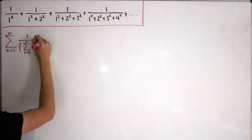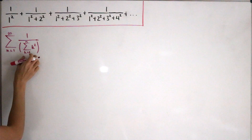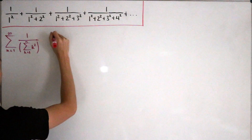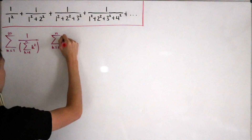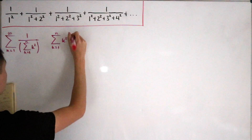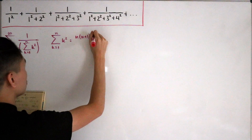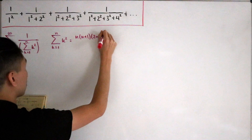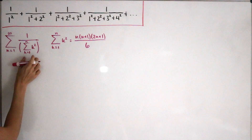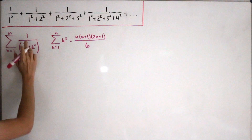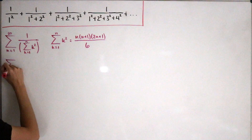The numerator is still 1. We use the well-known fact that the partial sum of k² has a closed form: it equals n(n+1)(2n+1)/6. With this fact we can substitute this back in — since it's in the denominator we just flip the reciprocal, so that's the plan.